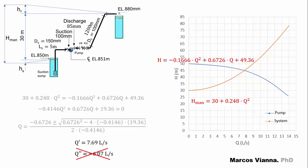The positive value will be the flow of the operating point. The head can be found by substituting Q in the formulas obtained for the pump and for the system.